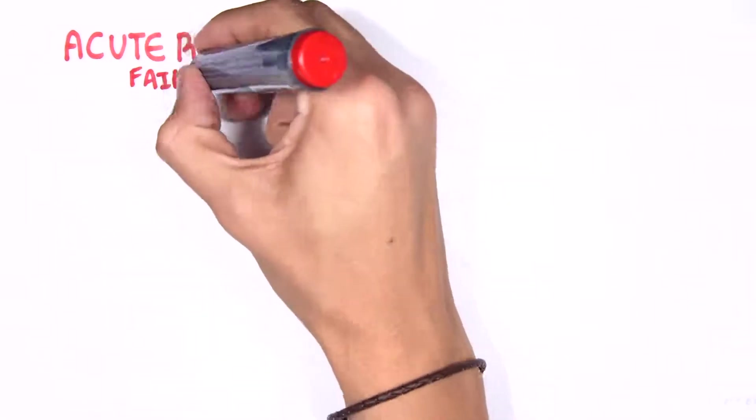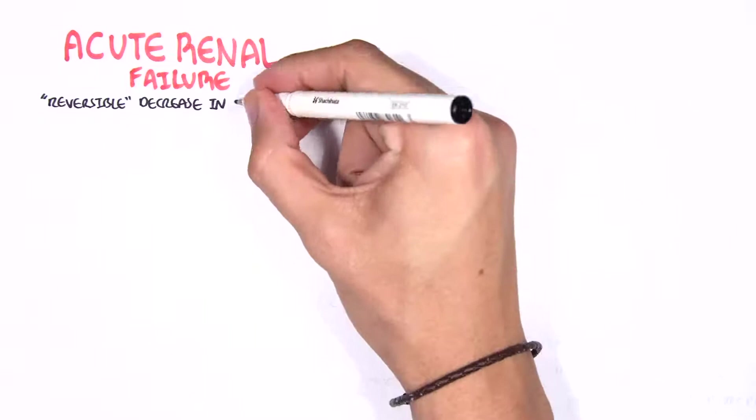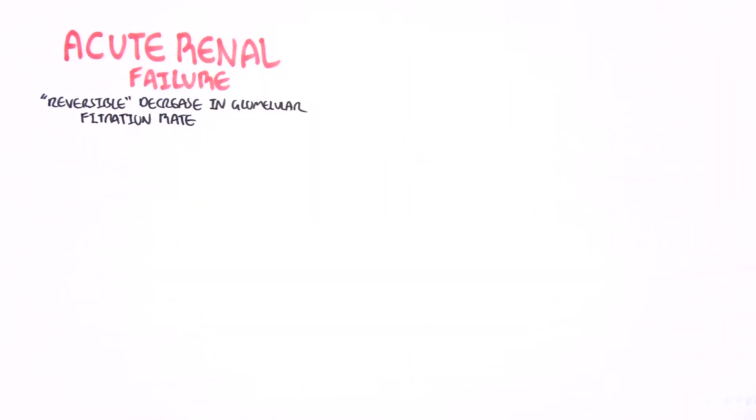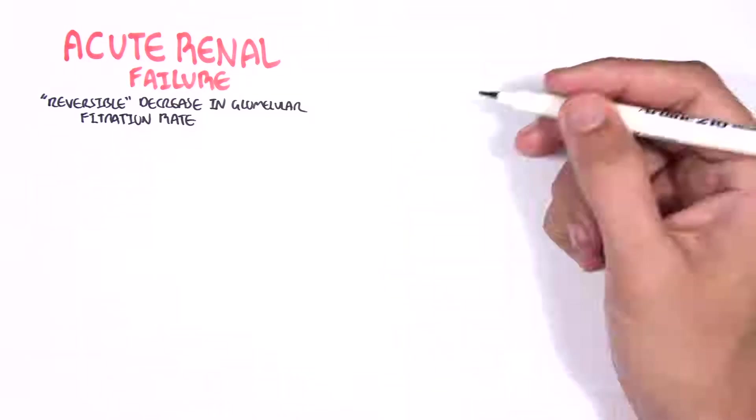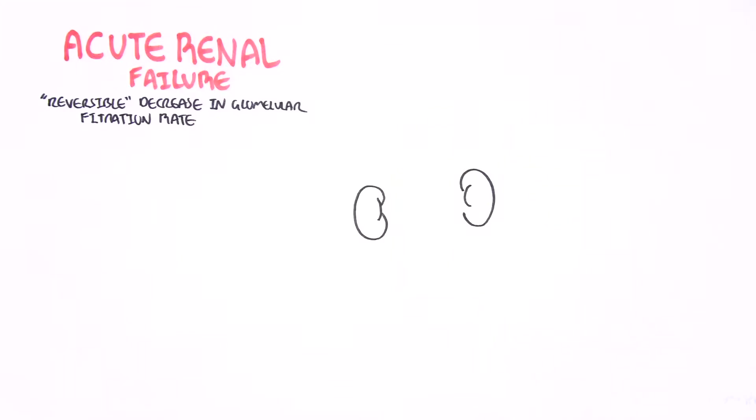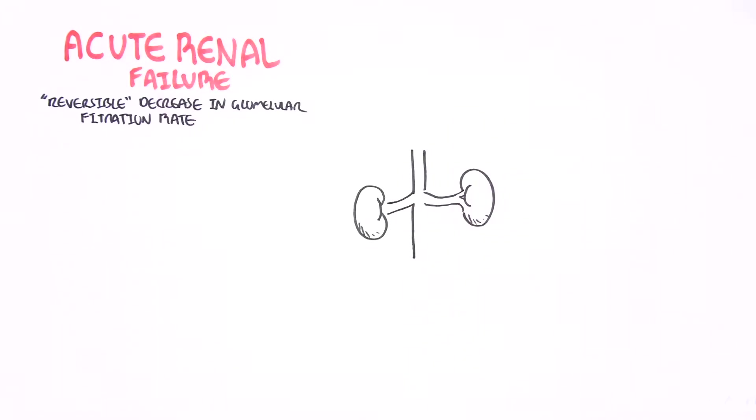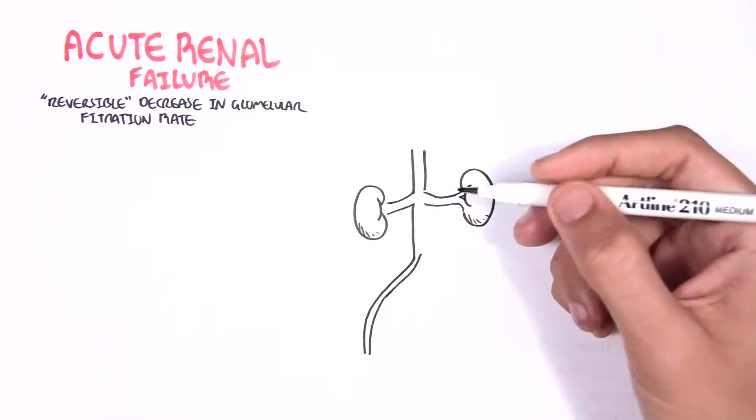as a decrease in glomerular filtration rate. I put reversible in quotations because it may be reversible, but essentially it's damage to the kidneys which will cause many problems. We'll look at these problems and some causes of acute renal failure.